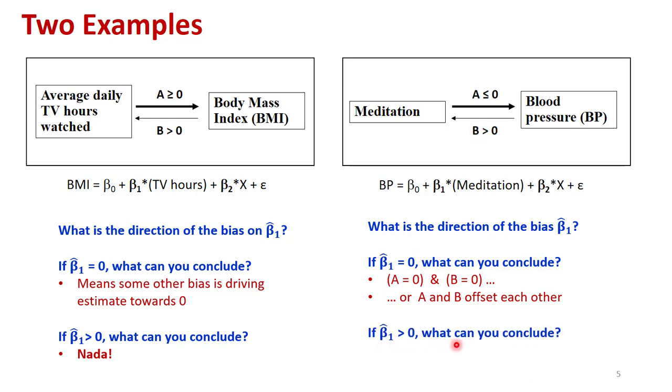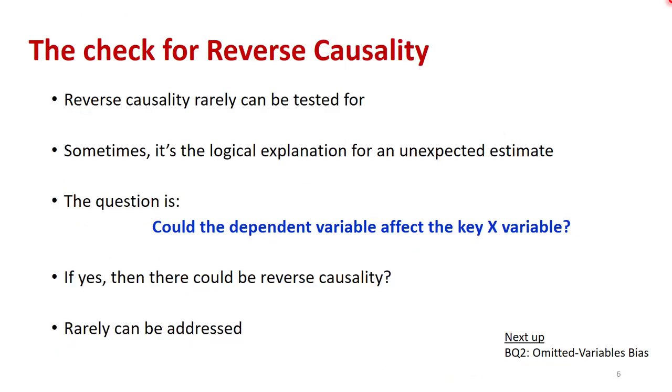And if beta one hat is greater than zero, what can you conclude? Well, this probably means that the reverse causality is dominating any possible effect that meditation has on blood pressure. This could mean that A equals zero or A is some small number compared to the magnitude of blood pressure, taking into account the different units that they're measured on.